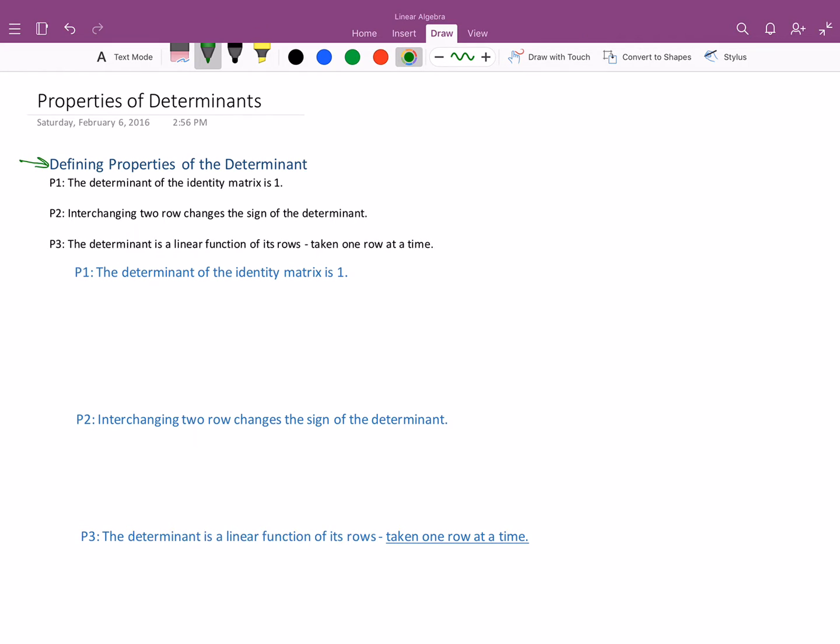So the three defining properties: the first one says that the determinant of the identity matrix is 1, and interchanging two rows changes the sign of the determinant, and that the determinant is a linear function of its rows. Now these three are defining properties, which means that these three alone can give us everything we need to know about the determinant.